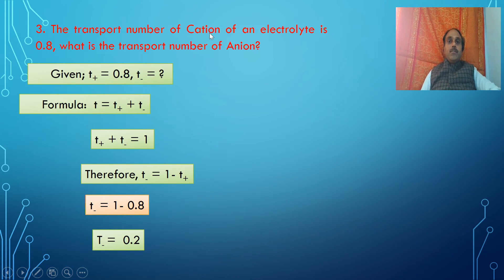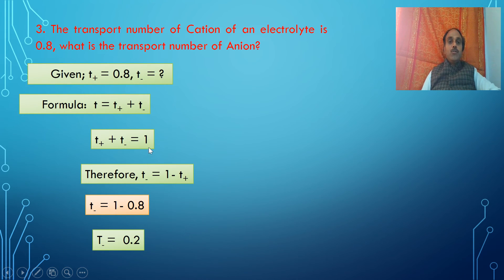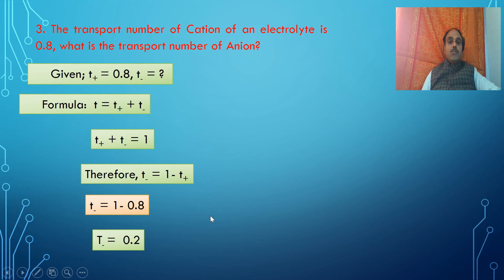Problem 3: the transport number of the cation of an electrolyte is 0.8. What is the transport number of the anion? The relation is: t⁺ + t⁻ = 1. Since the transport number of the cation is given as 0.8, rearranging: t⁻ = 1 − t⁺ = 1 − 0.8 = 0.2. Therefore, the transport number of the anion is 0.2.